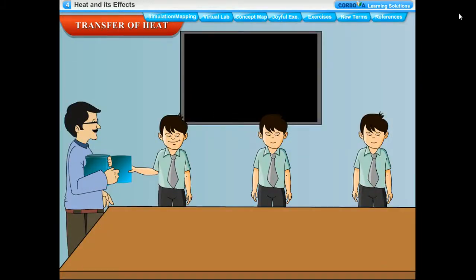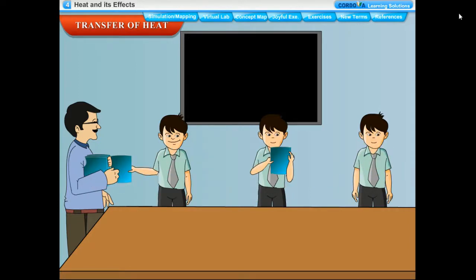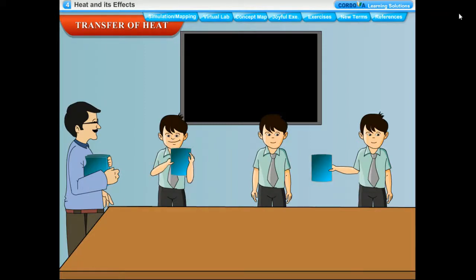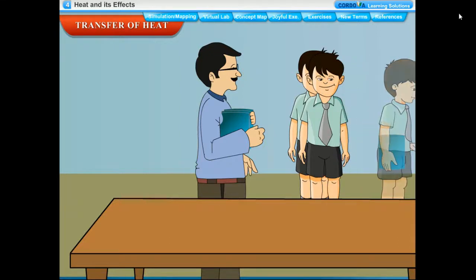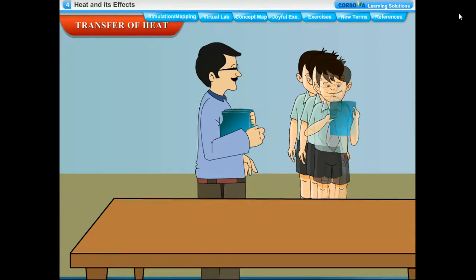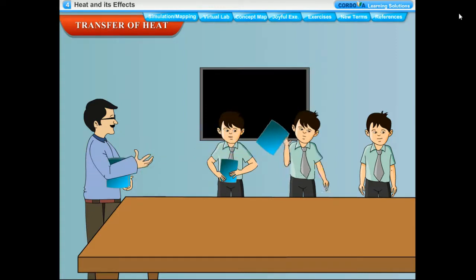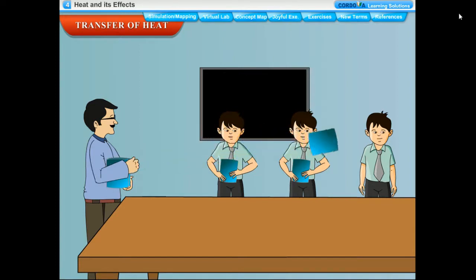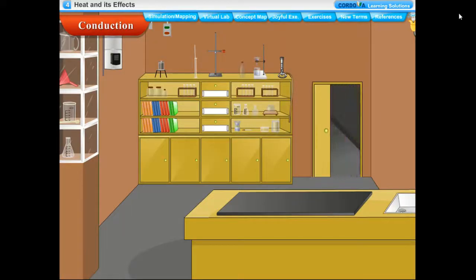Imagine a teacher distributing answer sheets in three ways: passing them along from student to student, calling students up one by one, or throwing them directly. In nature, there are three distinct ways in which heat is transferred: conduction, convection, and radiation. If we heat one end of a steel spoon over a gas burner, the other end also becomes hot after a while.